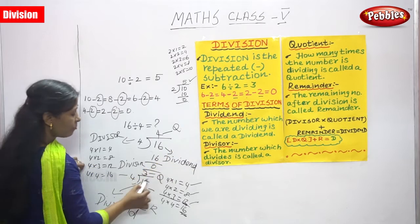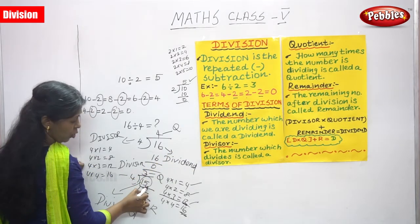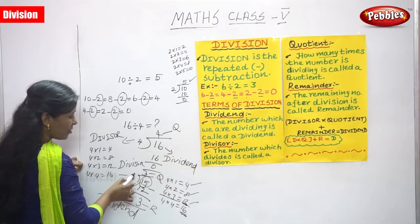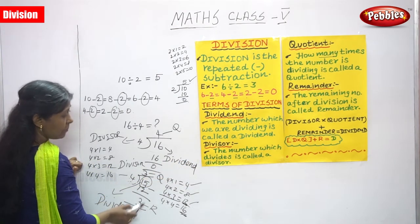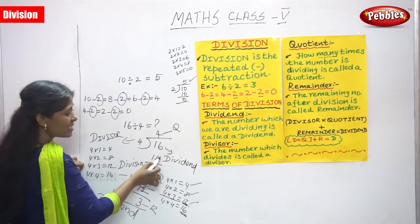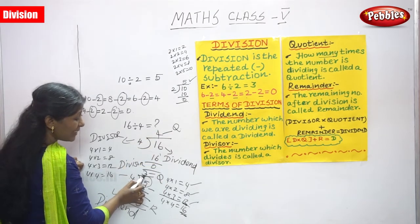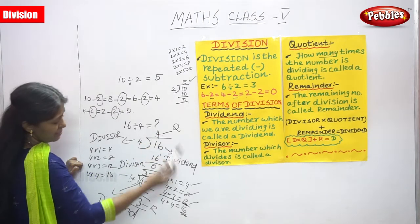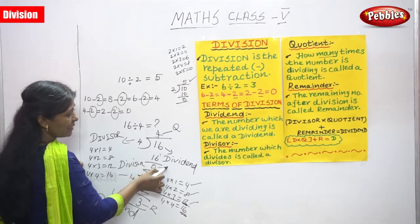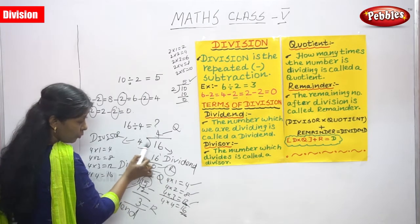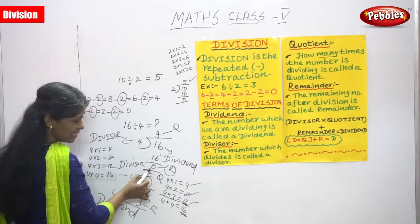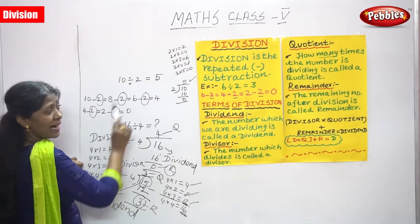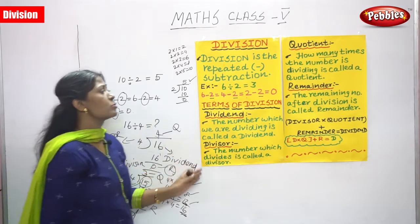So, the number which we are dividing is called the dividend. The number which divides is called the divisor. How many times the number is dividing is called the quotient — 3 times in this case, 4 times in the previous case. And the last is the remainder. In 16 divided by 4 we get 0 as remainder; in 15 divided by 4 we get 3 as remainder. Now I think you understand the terms of division.